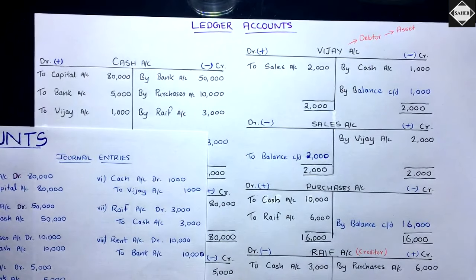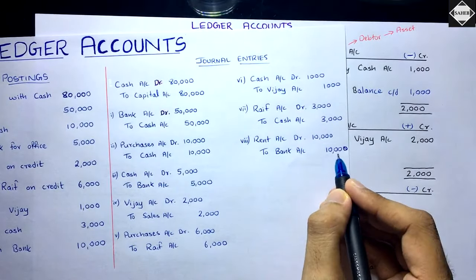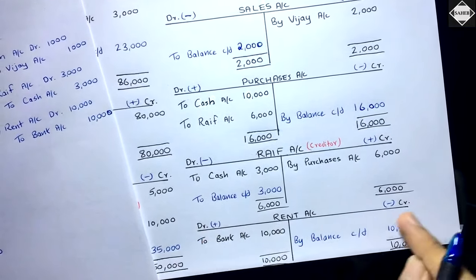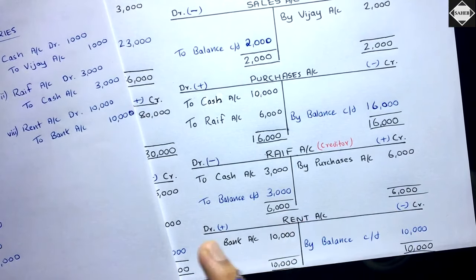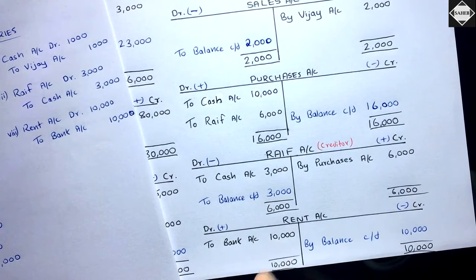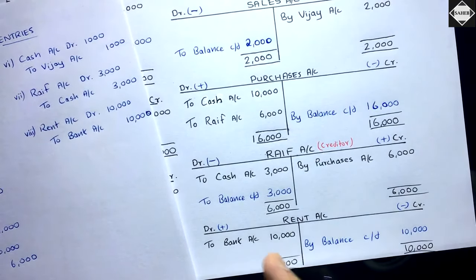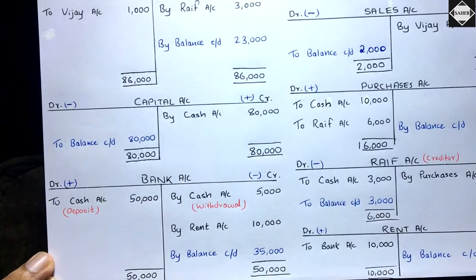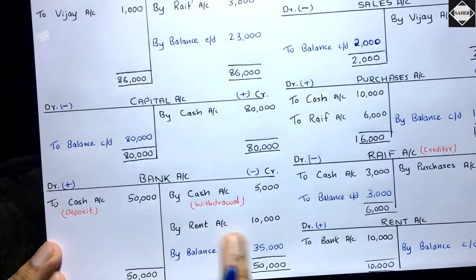Last transaction: paid rent through bank 10,000. Journal entry: Rent Account debit 10,000, to Bank Account 10,000. Opening the Rent Account — it's an expense with a debit balance, debit means plus. We incurred the expense, so: Rent Account debit, to Bank Account 10,000. Then in the Bank Account, the bank balance decreases because we paid rent, so: Bank Account credit, by Rent Account 10,000.